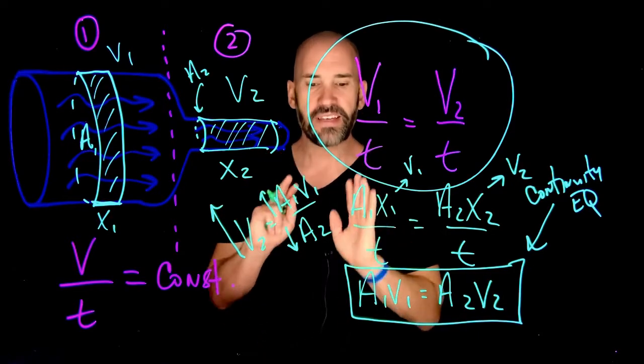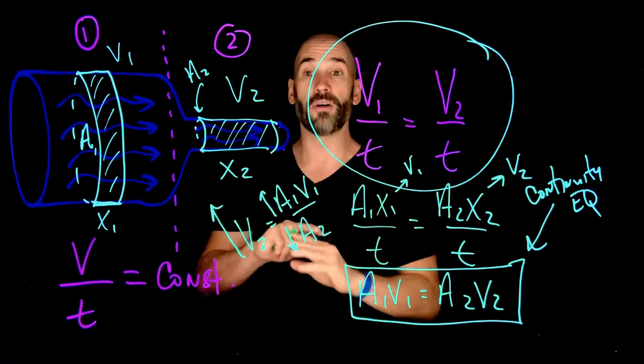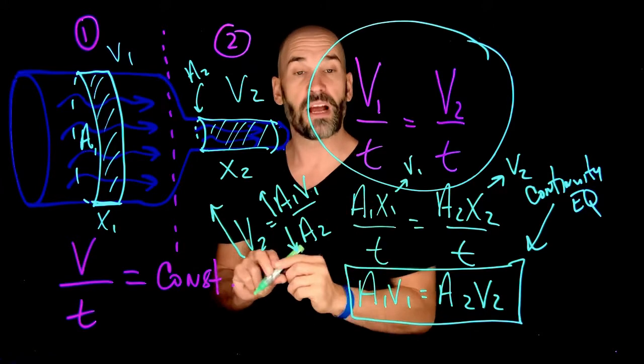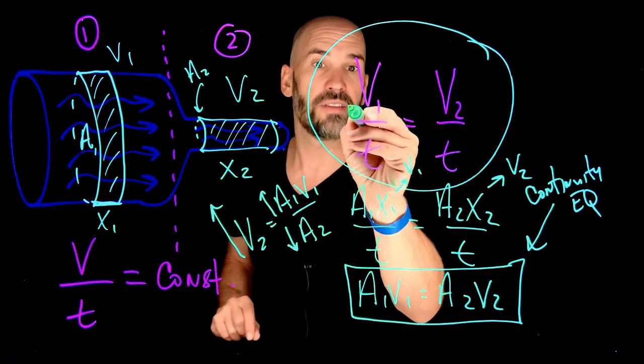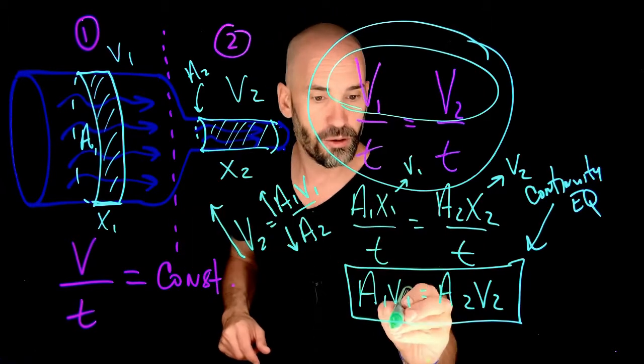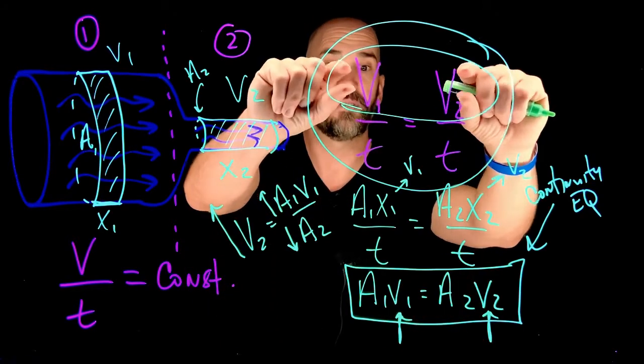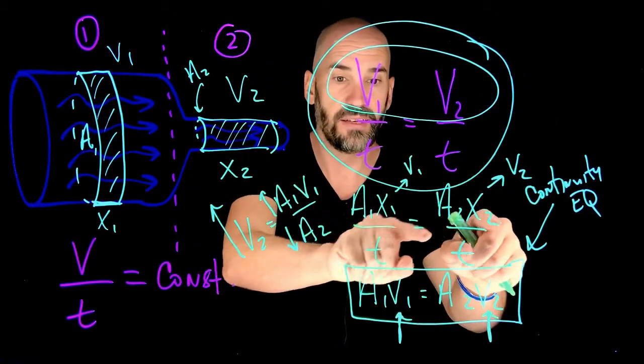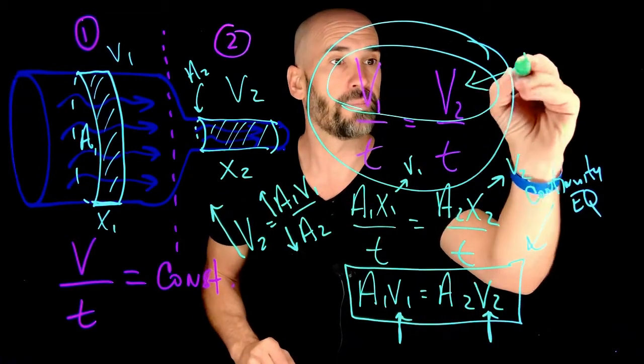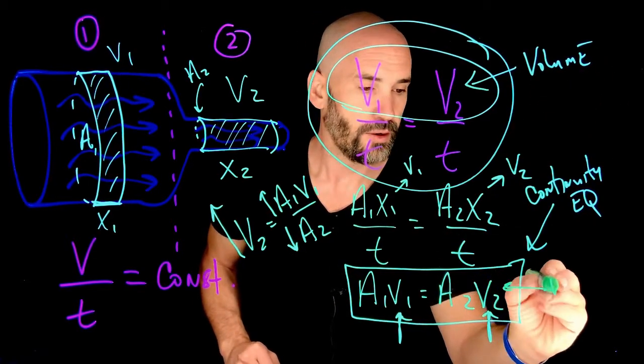So this is the continuity equation, and this is a property that governs the flow of all fluids all the time. One thing I want to be careful, one thing that's a little bit confusing here, is that here, these v's are volumes, it's a volume of water, and here, once we get to this point, these are actually velocities. So I'm replacing volume by a times x, but x over t are velocity, so don't get confused, this is volume, and this over here is velocity.